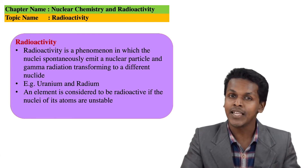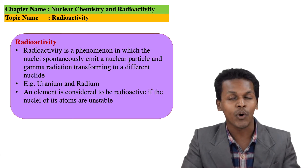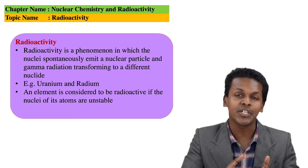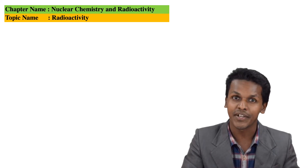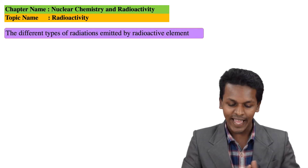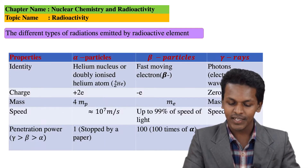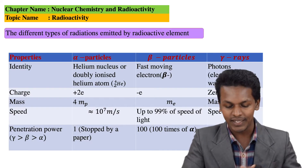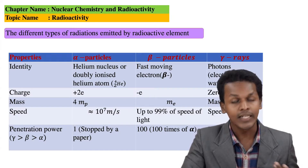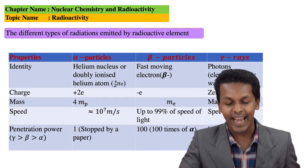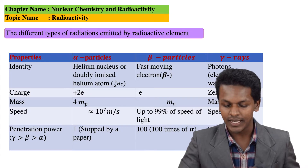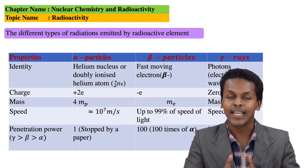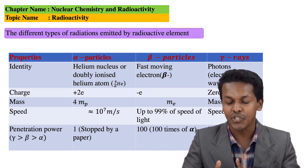Based on that, here we are going to talk about the radiation that could be emitted by the unstable nuclide. Here is a particular table that I am going to talk about regarding the alpha radiation, beta radiation, and gamma radiation. As you can see, there are three kinds of radiation.